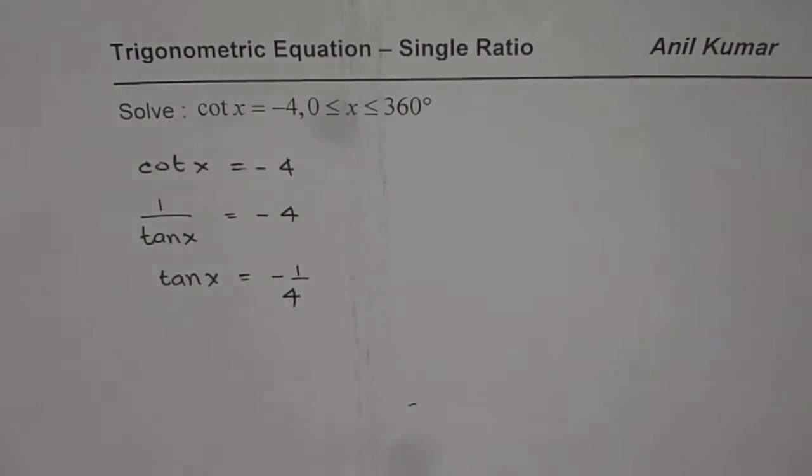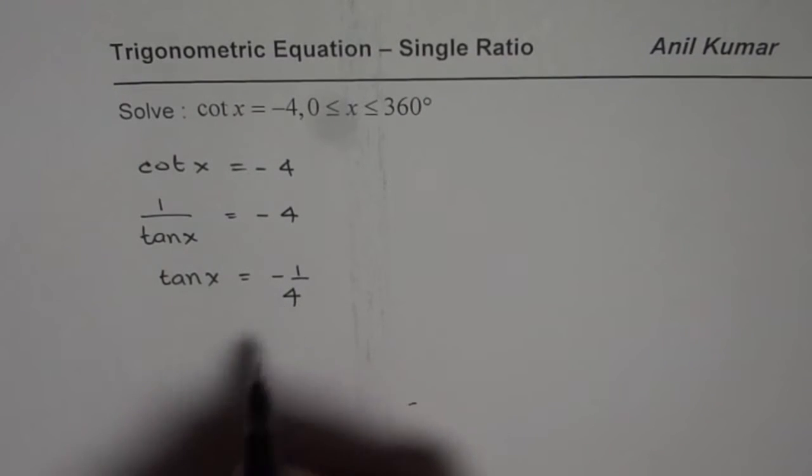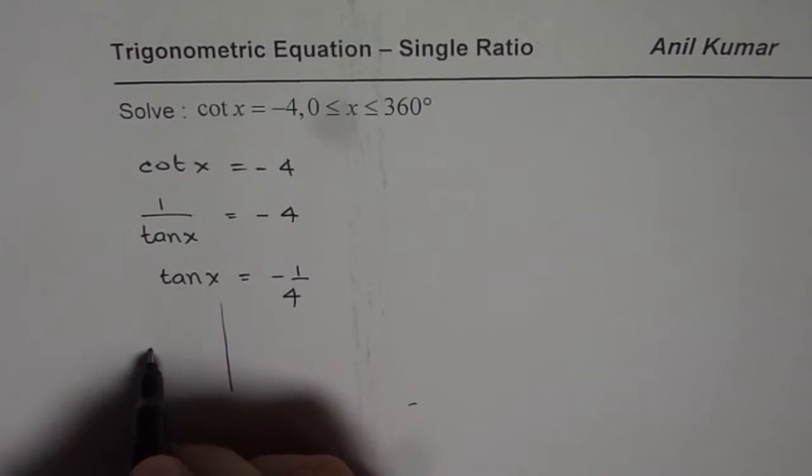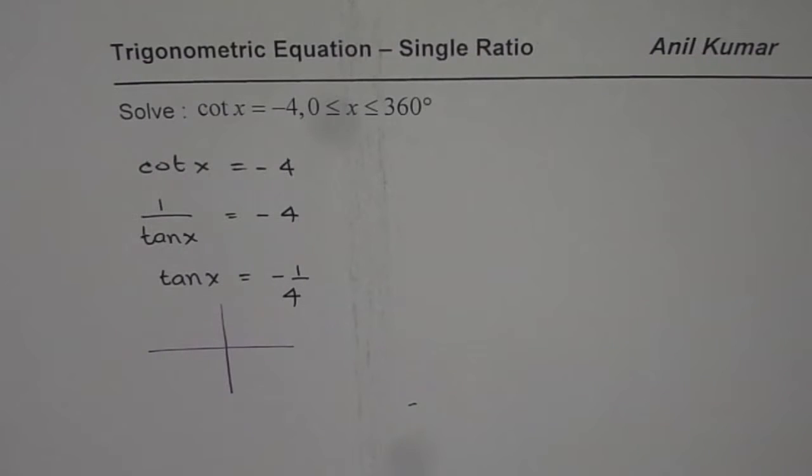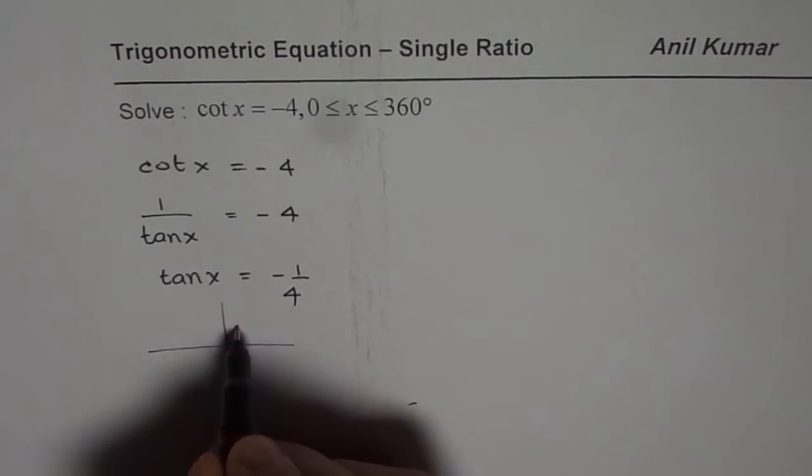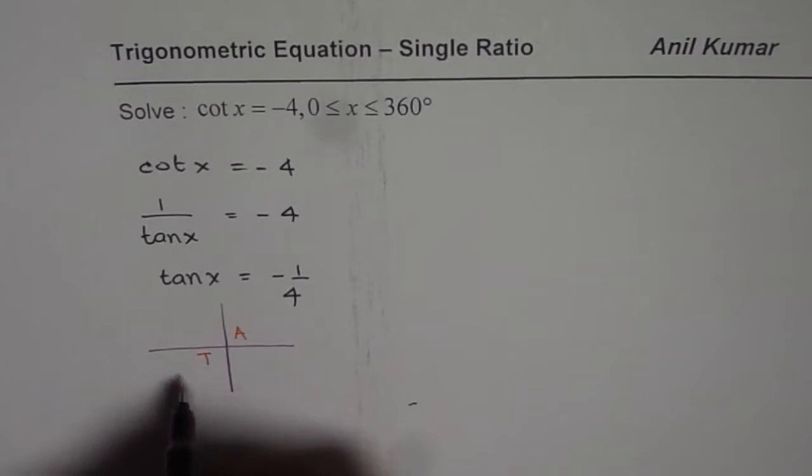Now once you get your equation, which is tan x equals to minus 1 over 4, you can now figure out which quadrant you are looking forward for the solution. All are positive here, tan is positive here. In these coordinates, sin and cosine are positive.